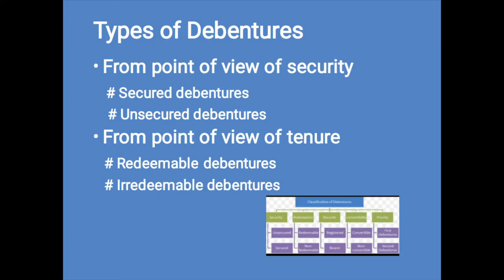The first classification is from the point of view of security: secured and unsecured debentures. Secured debentures are those where a charge is established on the properties or assets of the enterprise for the purpose of any payment. The charge might be either floating or fixed. Second, unsecured debentures do not have a particular charge on the assets of the enterprise. However, a floating charge may be established on these debentures by default. Usually these types of debentures are not circulated.